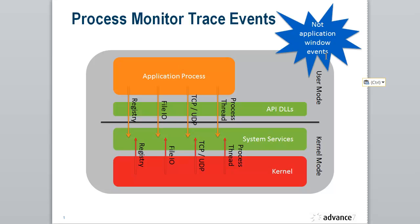What we don't see is an application's window events. So where an application updates the window by writing to it, or the application receives keystrokes and mouse movements — none of those events are visible in a Process Monitor trace.